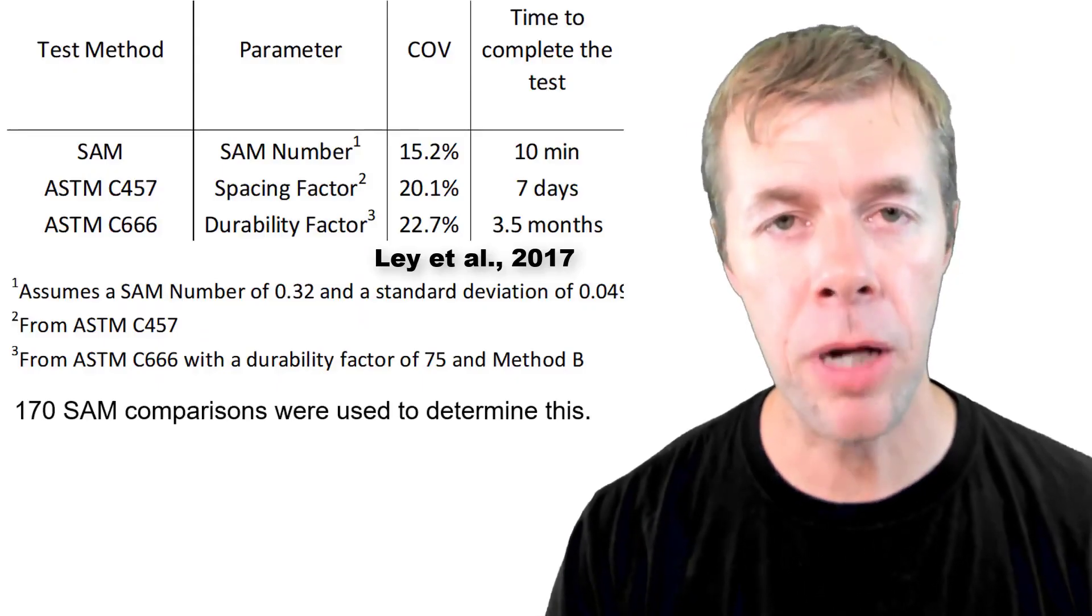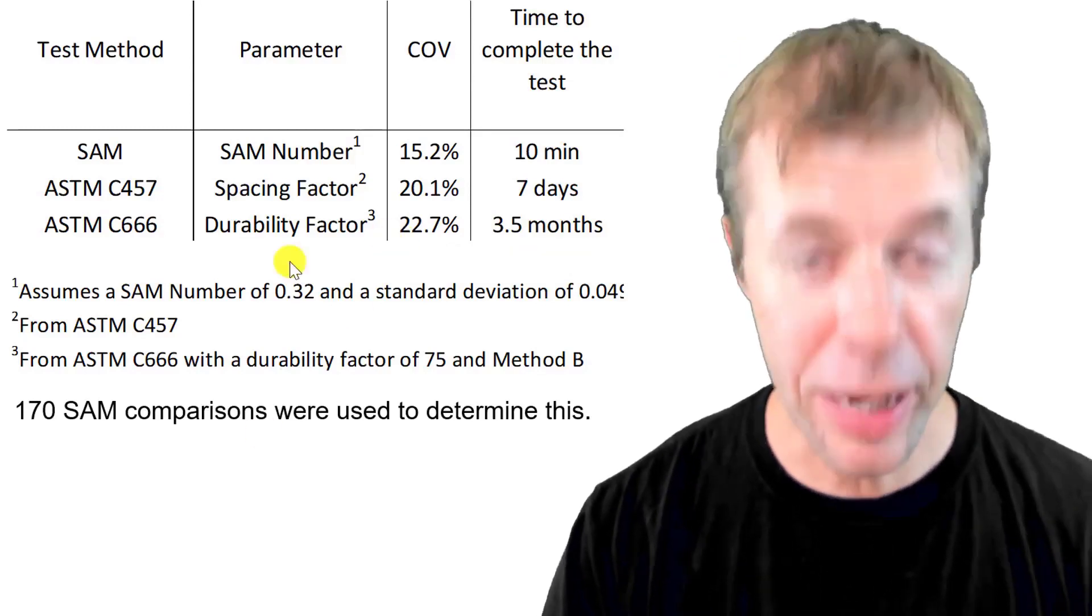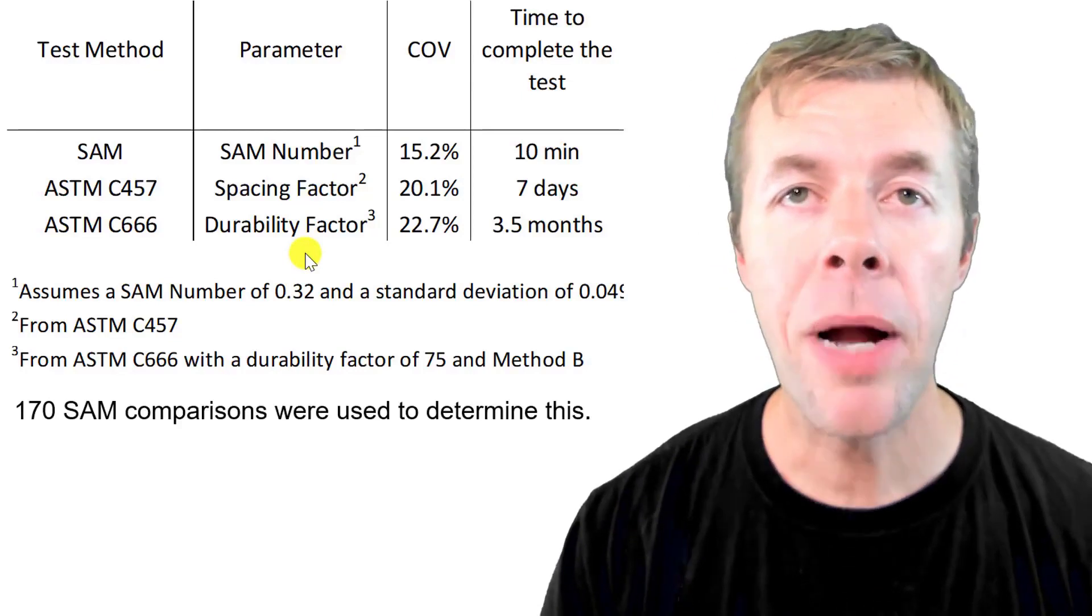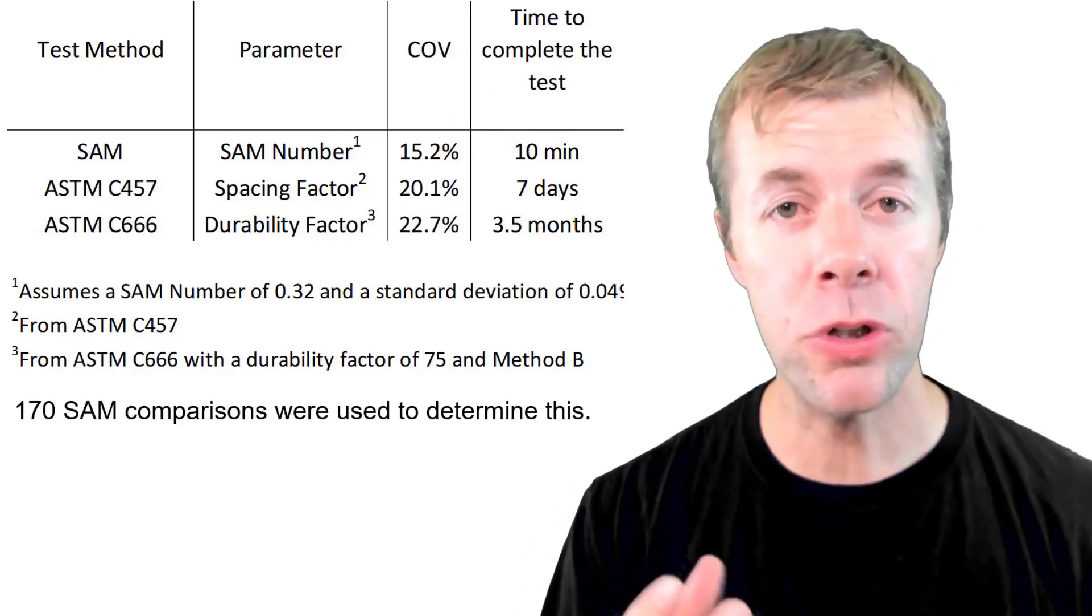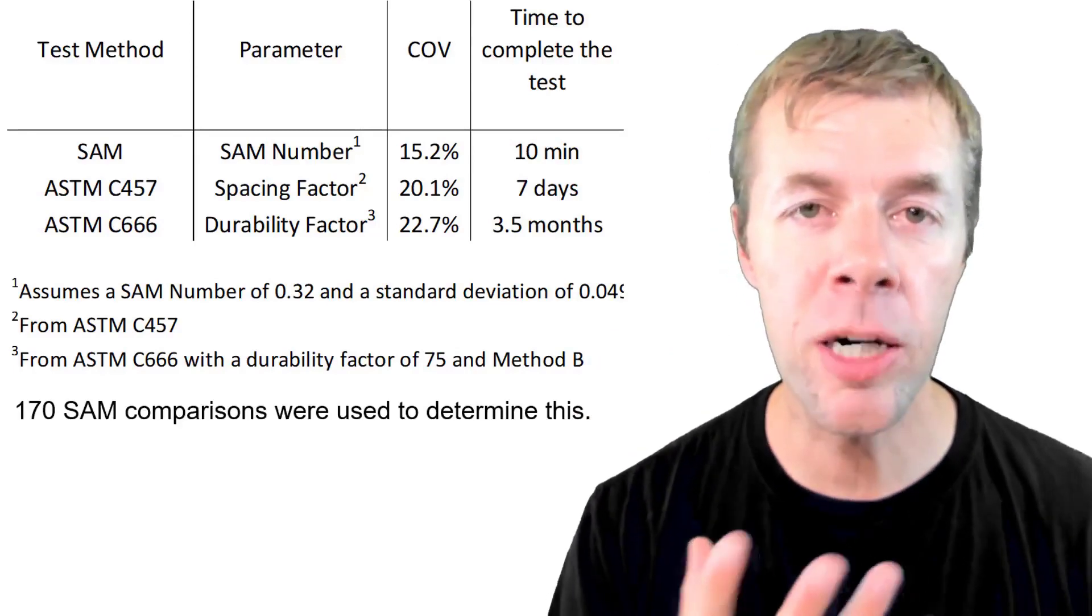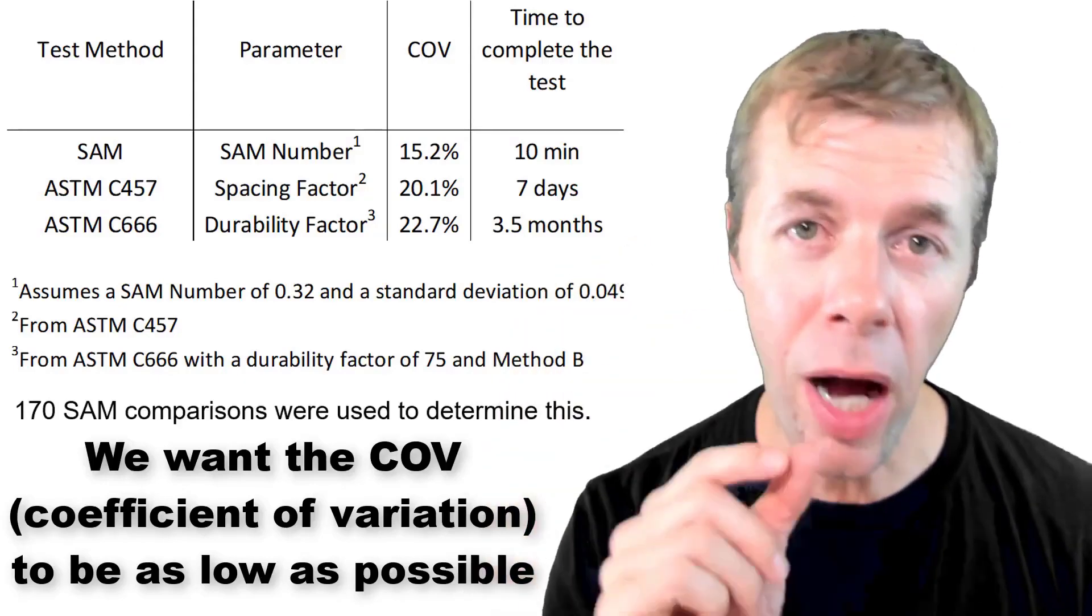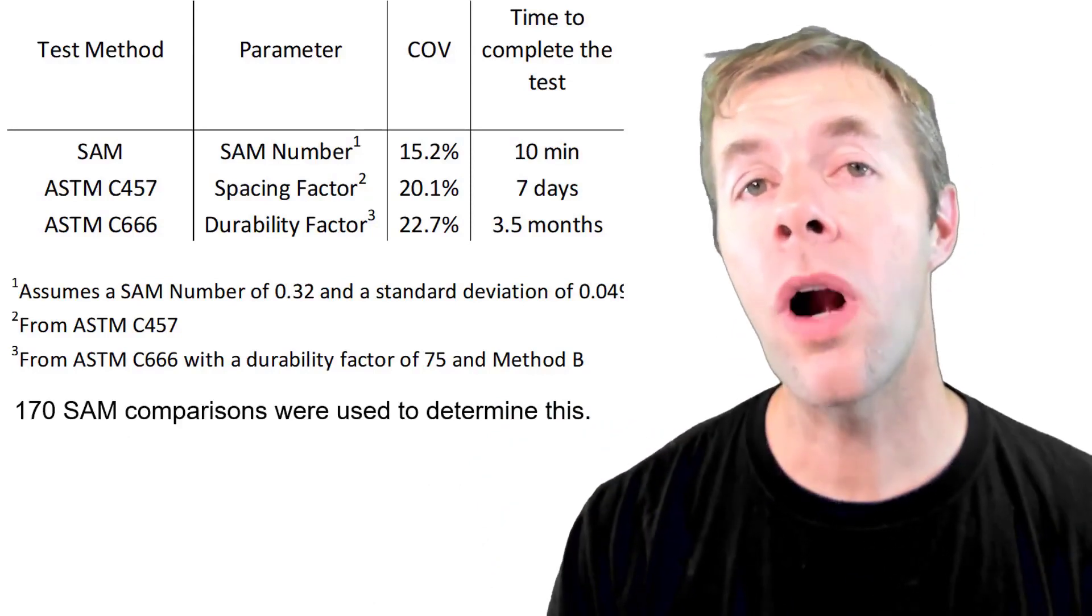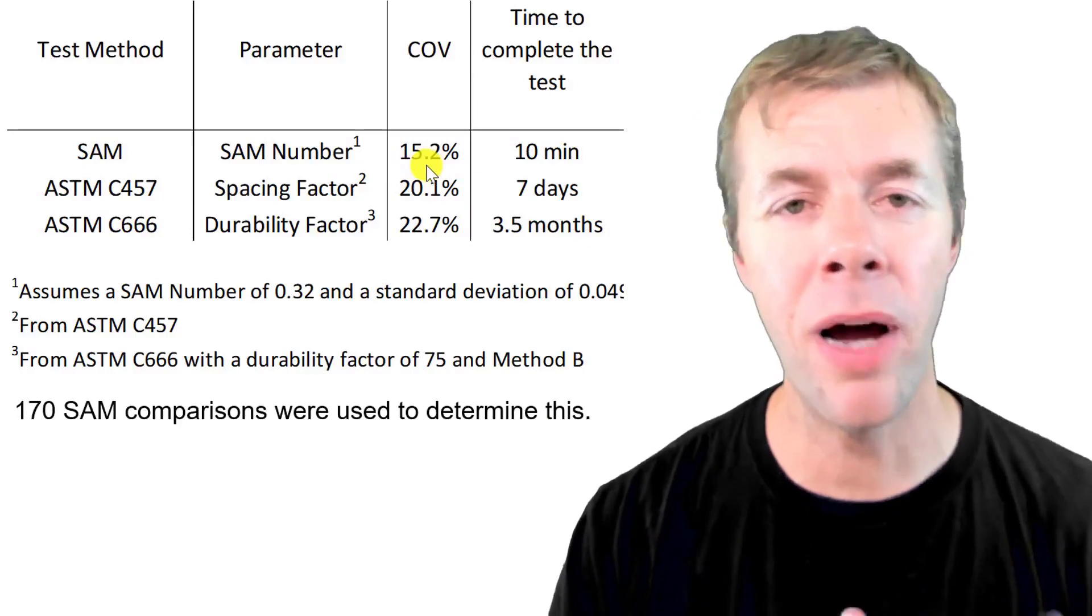If we compare the SAM number to these other measurements like the spacing factor or the performance in the rapid freeze-thaw test, I'm showing the coefficient of variation. That's a way a lot of people use to compare tests to one another to see how variable they are. We'd like that number to be as low as we possibly could. For 170 different SAM numbers we found the coefficient of variation was about 15%.